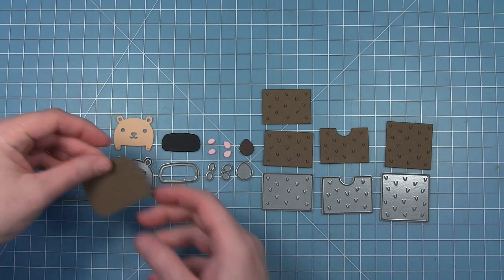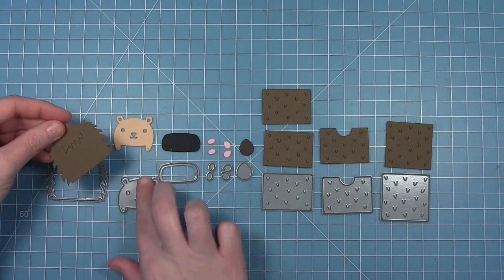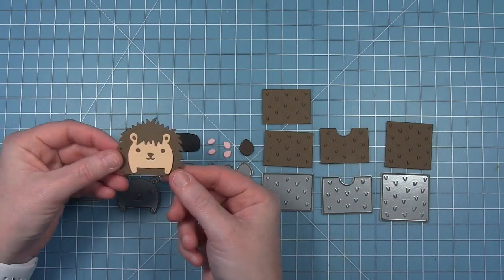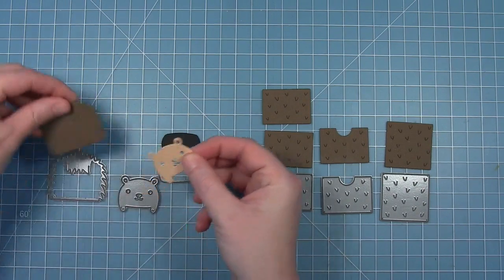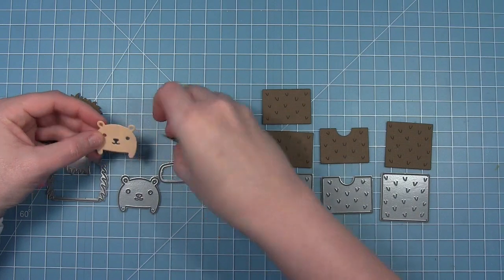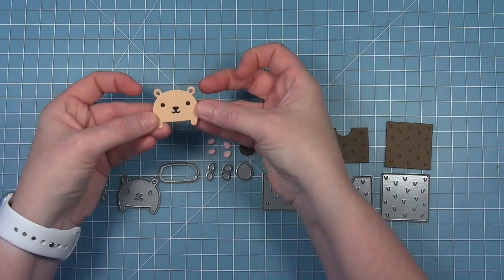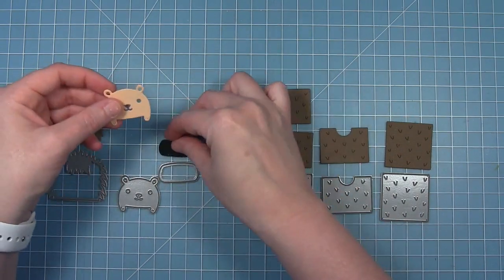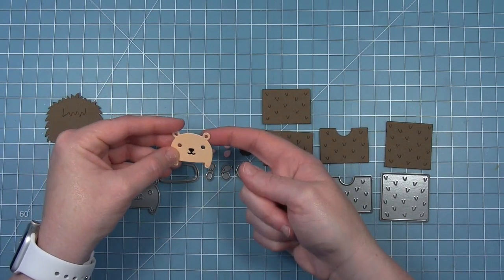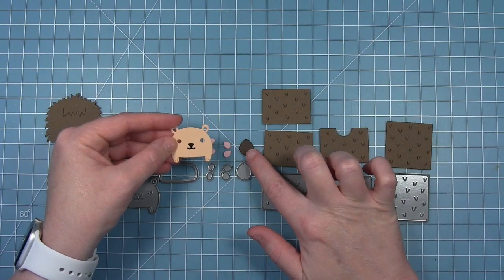There's a die that cuts out the face, a die that cuts out the spines around the face, and you can see how that face just tucks right in there. There's a die that cuts out a piece that will layer behind to fill in the eyes, the nose, and the mouth. There's a die for some tiny little rosy cheeks, and then these little teardrop pieces layer behind to fill in his ears.